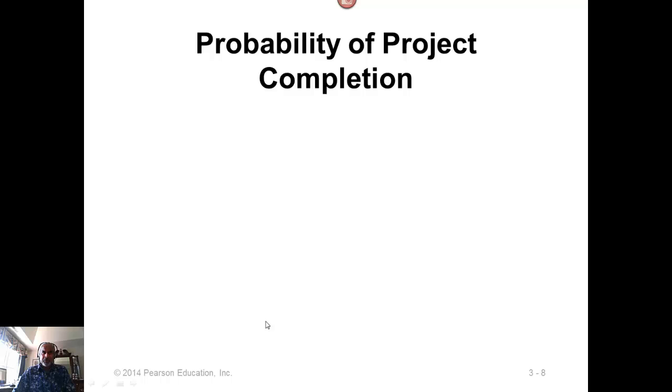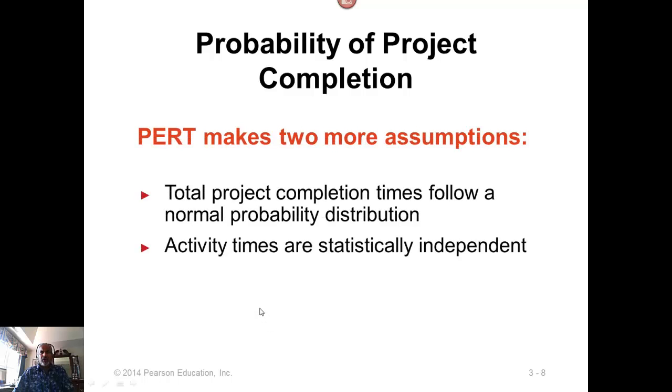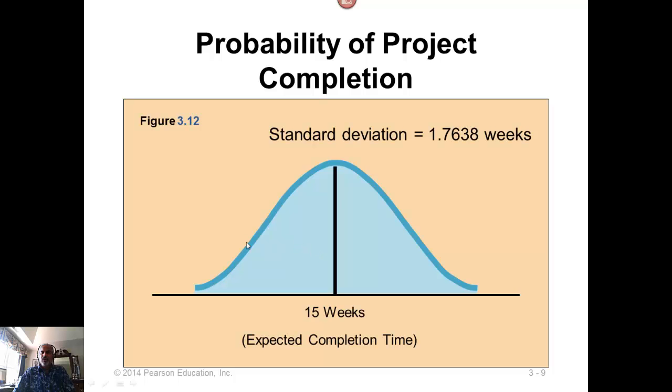Remember, for this project, the expected project completion time was 15 weeks. Now we have expected completion time of 15 weeks and the standard deviation. If the activity times are beta distribution, then the project completion time will follow normal distribution. And if the activity times are statistically independent, then we can compute probabilities using normal distribution. The expected time is the mean, the standard deviation we just found out.